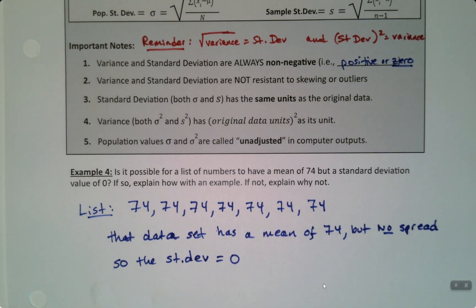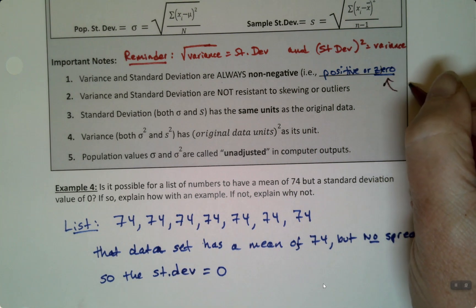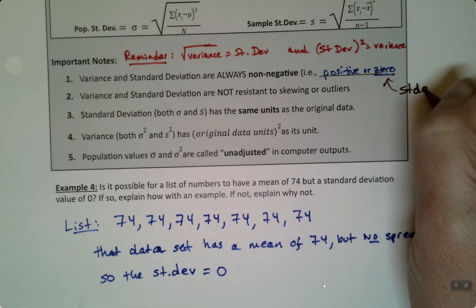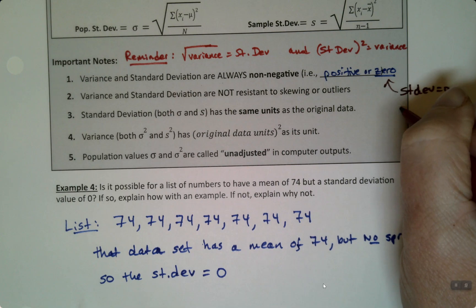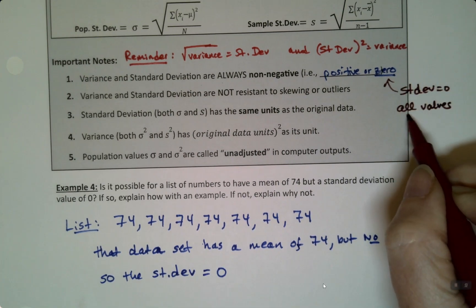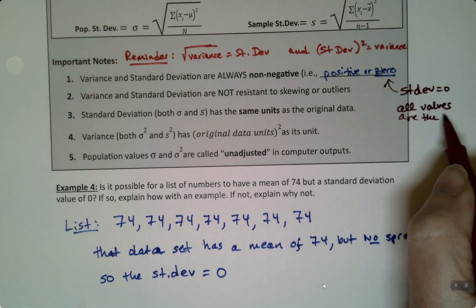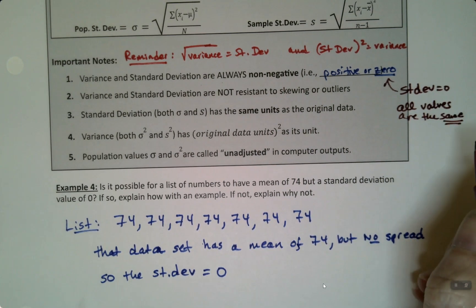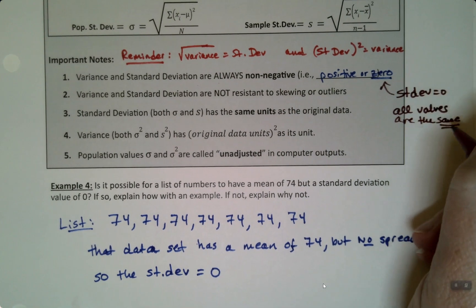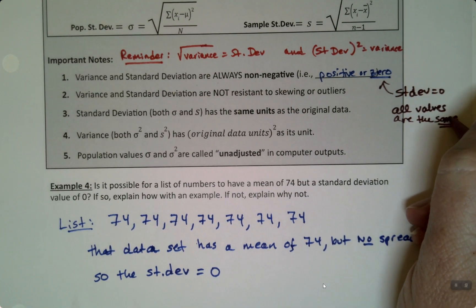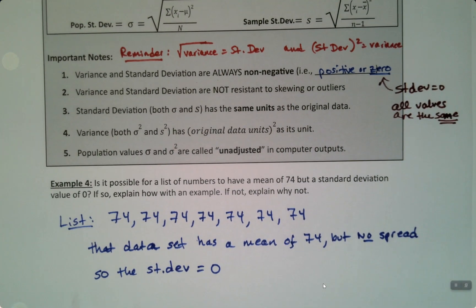So the lowest a standard deviation can ever go is zero. As a matter of fact, that's how we get a standard deviation of zero anytime, is just if all the values are the same. So if standard deviation equals zero, means all values are the same. But that's as low as we can go.